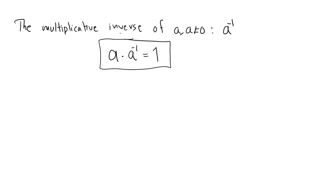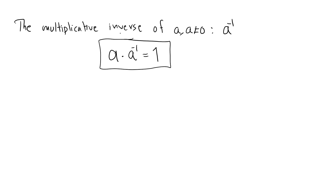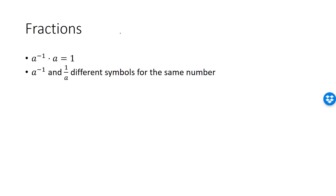Our first fraction rule is an axiom simply defining the symbol a raised to minus 1. We have two different symbols for multiplicative inverse: a inverse and 1 over a. They mean exactly the same thing. Since 0 doesn't have a multiplicative inverse, 0 inverse and 1 divided by 0 is not defined.